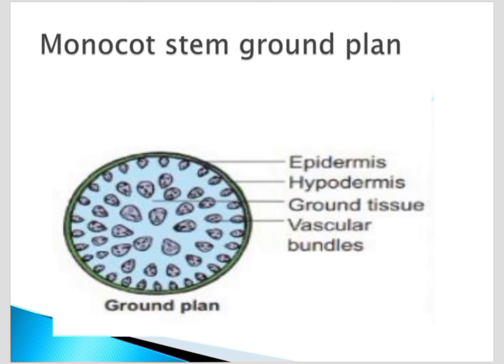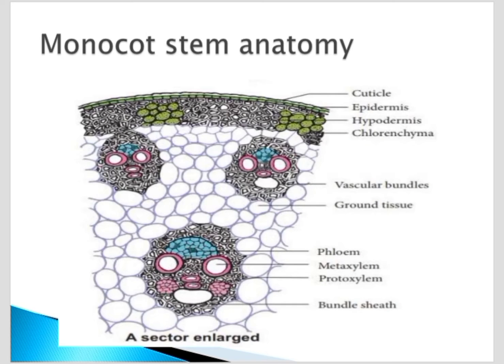Scattered vascular bundles can be seen in the ground tissue, which is nothing but the cortex. They are not arranged in a specific order. Larger vascular bundles are at the center and smaller peripheral ones are present. The vascular bundles do not contain cambium because secondary growth is absent. Phloem is towards the peripheral and xylem towards the center, so radial symmetry is present.